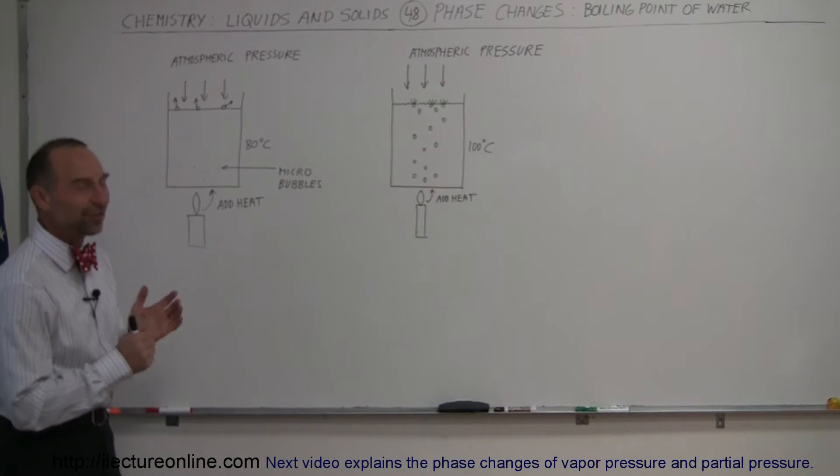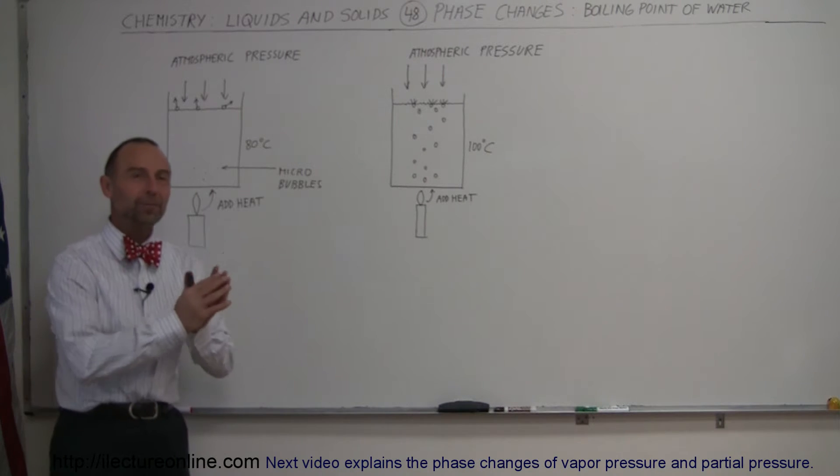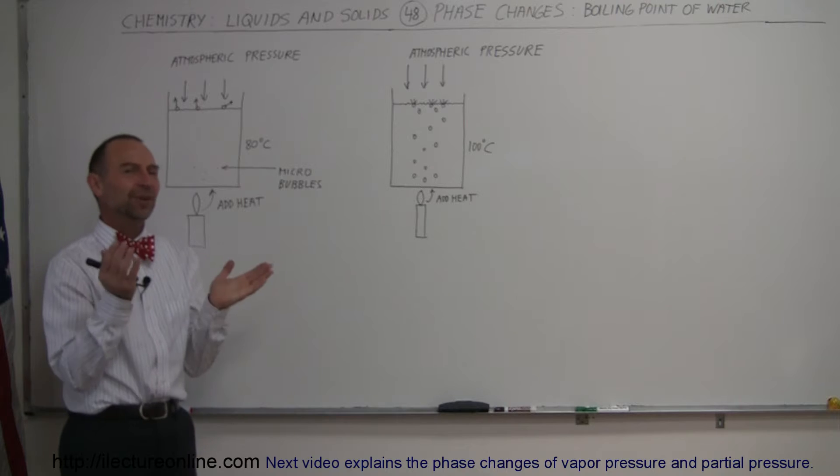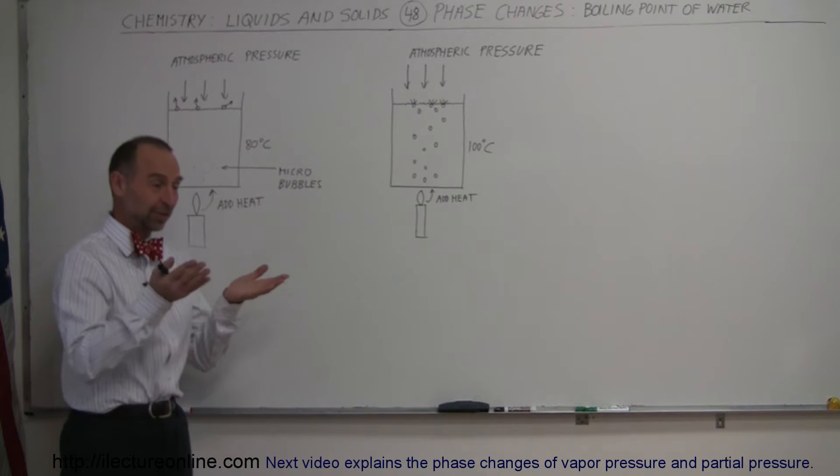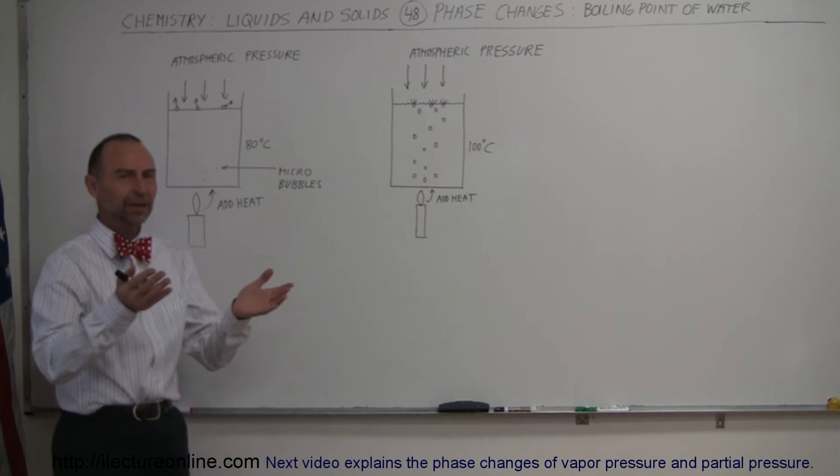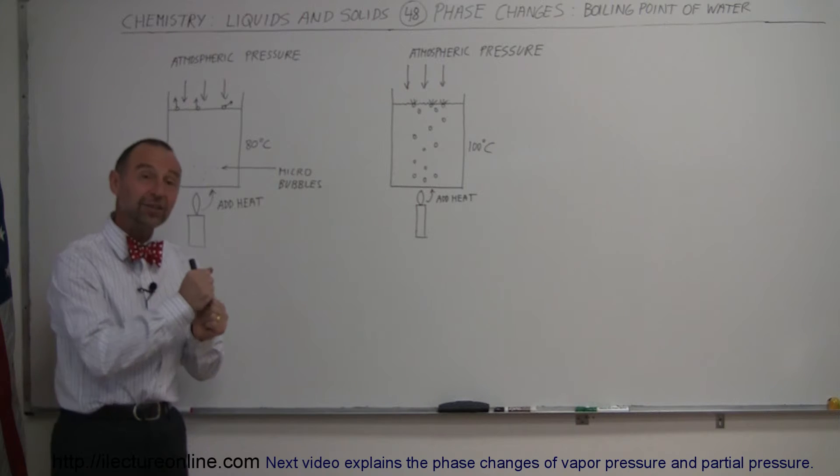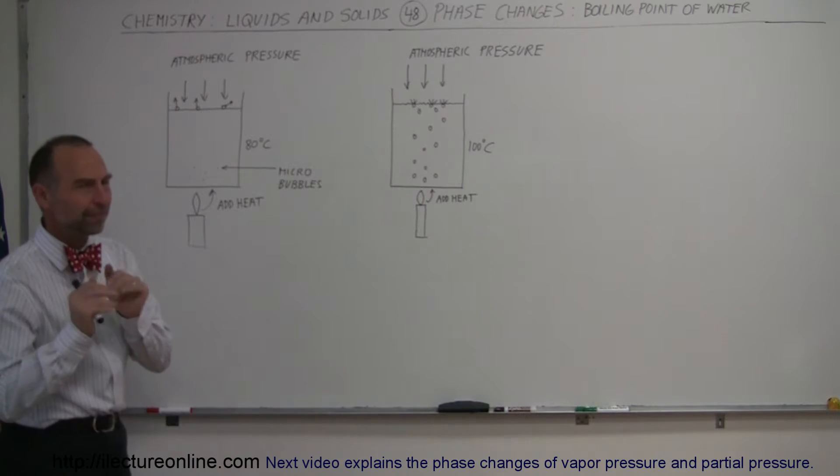Welcome to Electra Online. We're going to talk about the concept of the boiling point of water. It seems very simple - water reaches a temperature of 100 degrees centigrade and begins to boil. But what exactly is going on? Why does it do that? Let's try to figure it out.